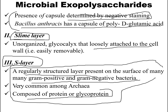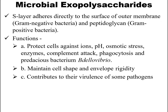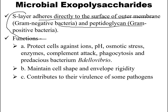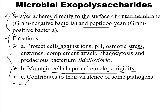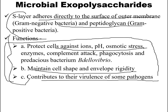These are the important features of glycocalyx: the capsule, slime layer, and S layer. The S layer adheres directly to the surface of the outer membrane in gram-negative bacteria and to peptidoglycan in gram-positive bacteria. Overall, glycocalyx protects cells against ions, pH changes, osmotic stress, enzymes, complement attack, and phagocytosis. It also maintains cell shape and envelope rigidity, and contributes to the virulence of some pathogens.